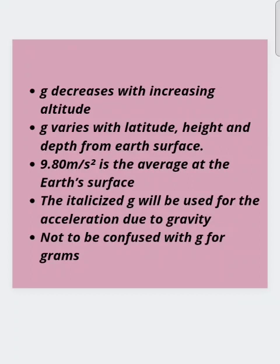g decreases with increasing altitude. As you go above sea level, g will decrease. g varies with latitude, height, and depth from the Earth's surface. 9.80 m/s² is the average at the Earth's surface. The italicized g is used for acceleration due to gravity — not to be confused with g for grams — because g stands for acceleration due to gravity, that is 9.8 m/s².